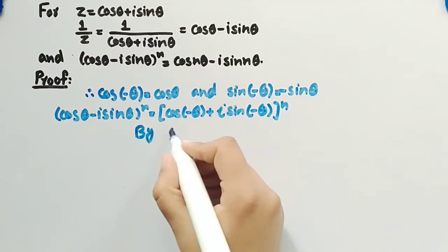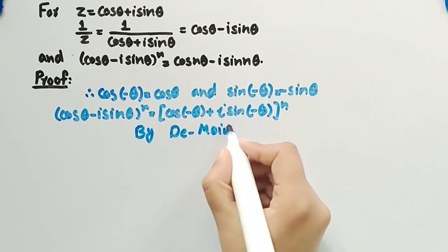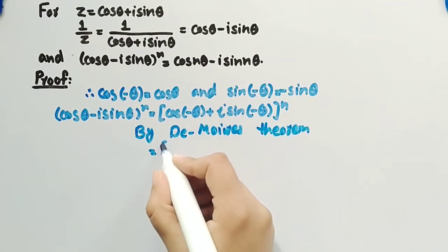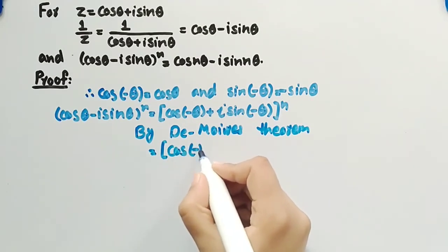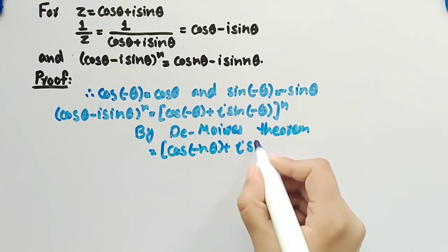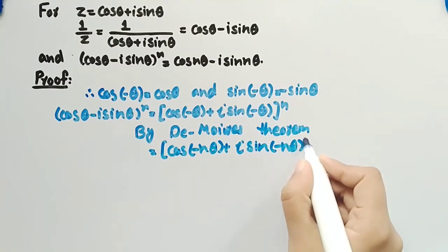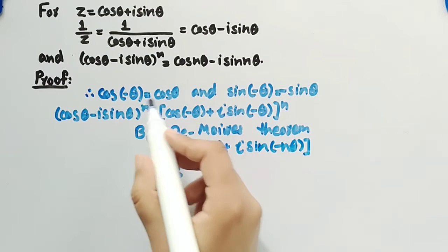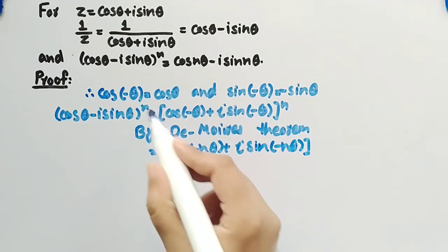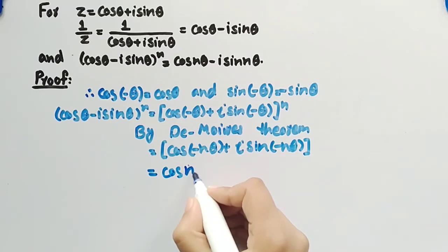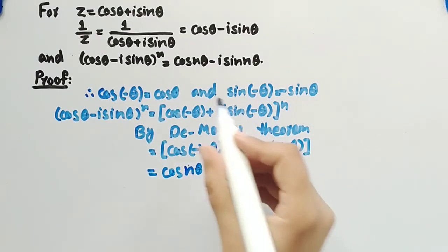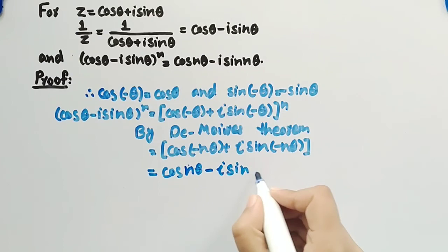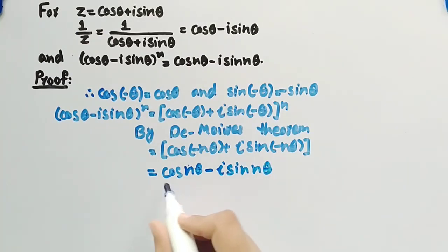By applying De Moivre's theorem, we can write this as cos(−nθ) + i sin(−nθ). Then, using the same trigonometric properties, cos(−nθ) = cos nθ and sin(−nθ) = −sin nθ, giving us cos nθ − i sin nθ, which is the required result.